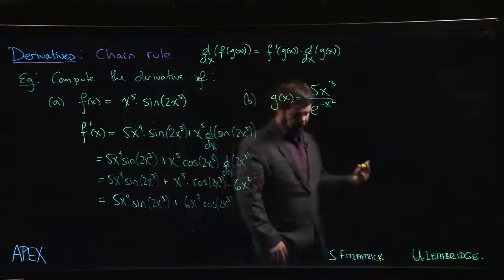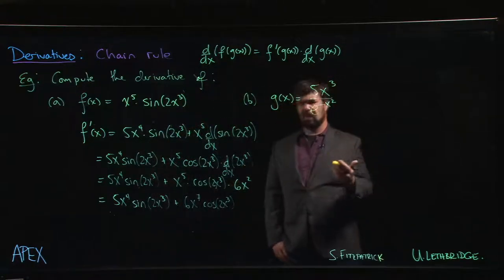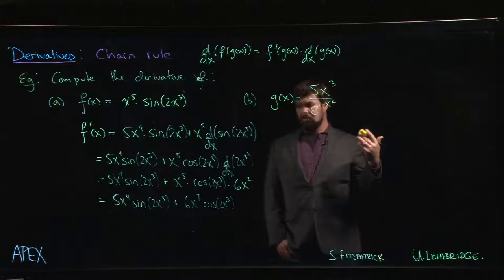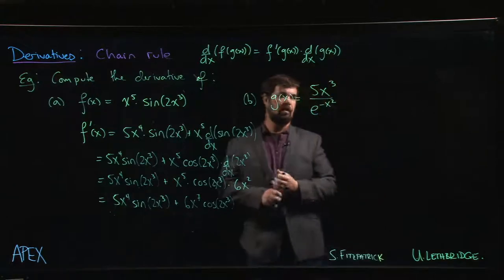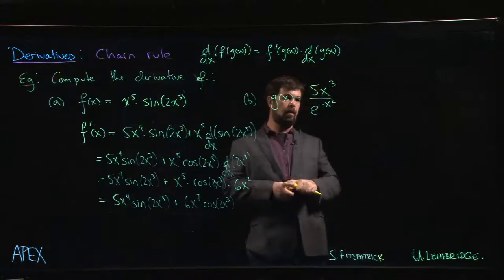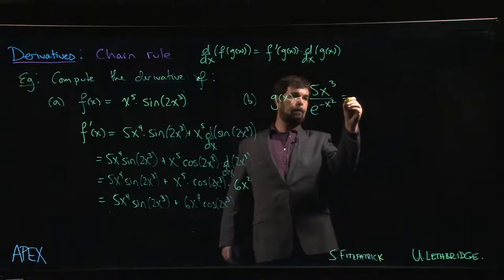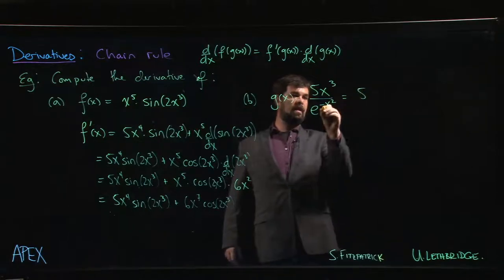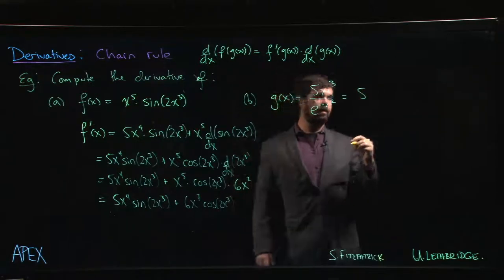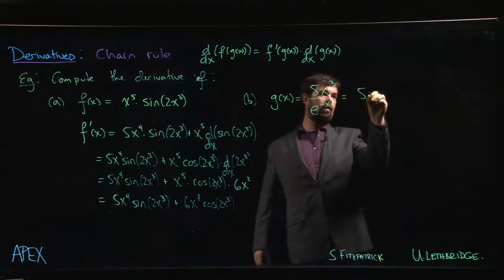But as we've discussed, the quotient rule is kind of messy. And most people, if they can avoid the quotient rule, they're going to avoid the quotient rule. And in this case, we say, wait a second, laws of exponents tell me that this negative exponent, if I bring that up to the numerator, it becomes a positive exponent.